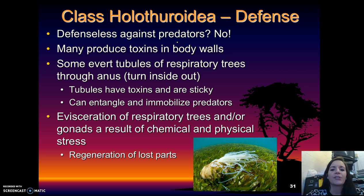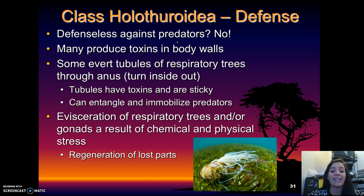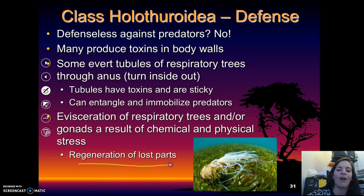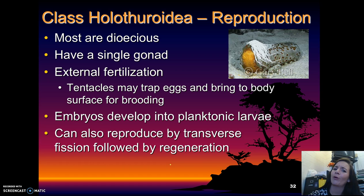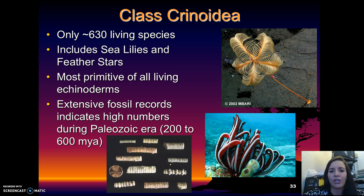They are not defenseless — they produce toxins in their body walls, and in some species the respiratory trees can be expelled and turned inside out. These tubules have toxins and are sticky, capable of entangling and immobilizing predators. They can also regenerate lost parts. In reproduction, they are dioecious with a single gonad and external fertilization. The tentacles trap eggs and bring them to the body surface for brooding. Embryos develop into plankton-like larvae, but they can also reproduce by transverse fission followed by regeneration.